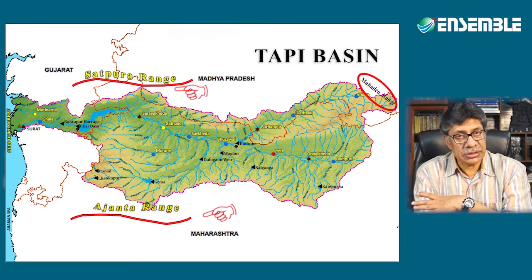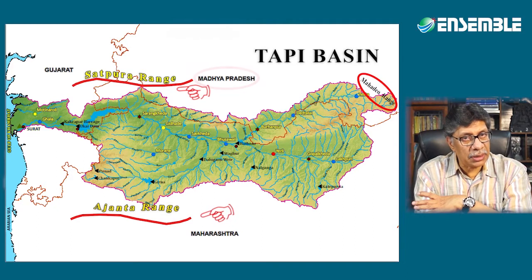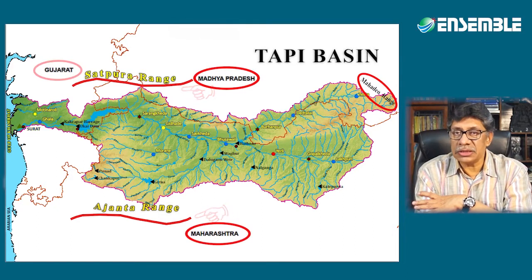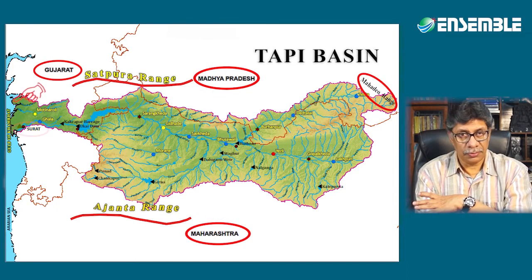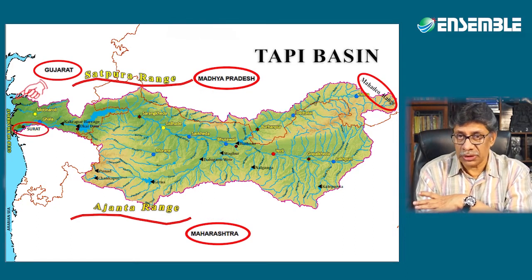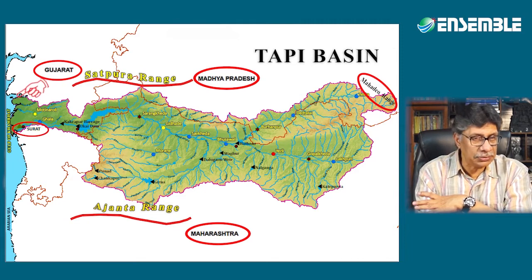The Tapti passes through Madhya Pradesh, Maharashtra and Gujarat, and drains into the Gulf of Kambhat. The port of Surat is situated at the mouth of the Tapti.